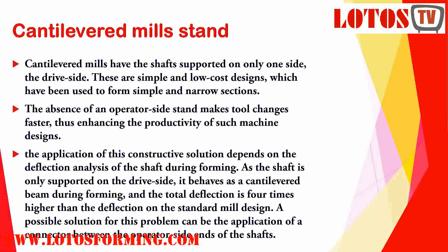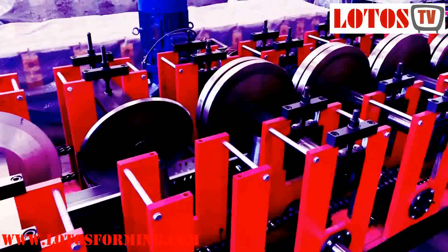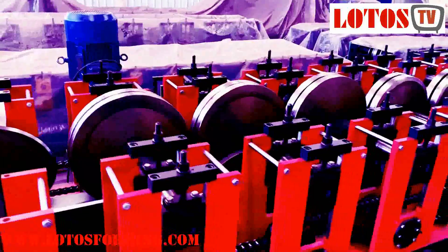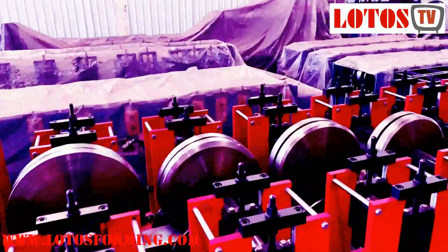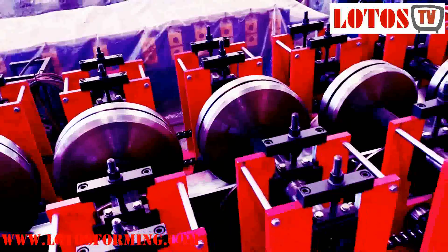The second type is cantilever mills, which have the shaft supported on only one side — the drive side. These are a simple and low-cost design used for forming simple and narrow sections. The absence of an operator-side stand makes tool changes faster, enhancing productivity. However, the application of this design depends on the deflection analysis of the shaft during forming, since it behaves as a cantilever beam. The total deflection is four times higher than deflection on a standard mill design.